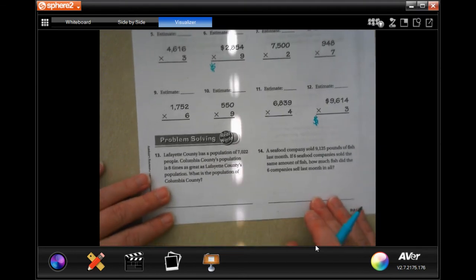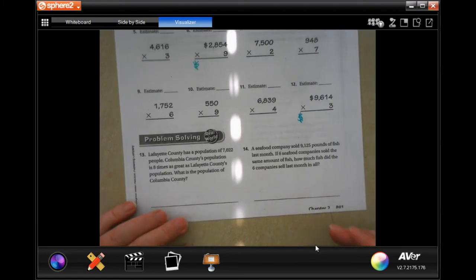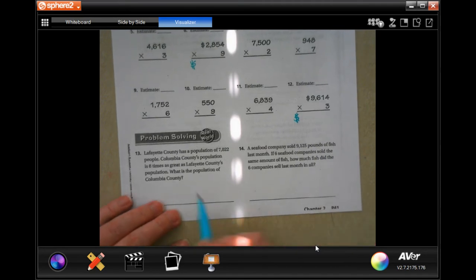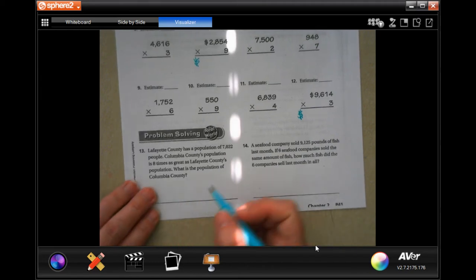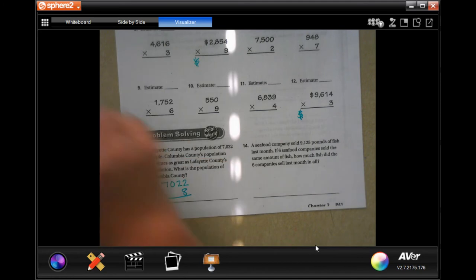We are going to go down to our problem solving. So 13 and 14. Number 13 says Lafayette County had a population of 7,022 people. Columbia's County population is 8 times as great as Lafayette. So what is the population of Columbia County? So we're going to take that 7,022, and we're going to multiply that by 8.